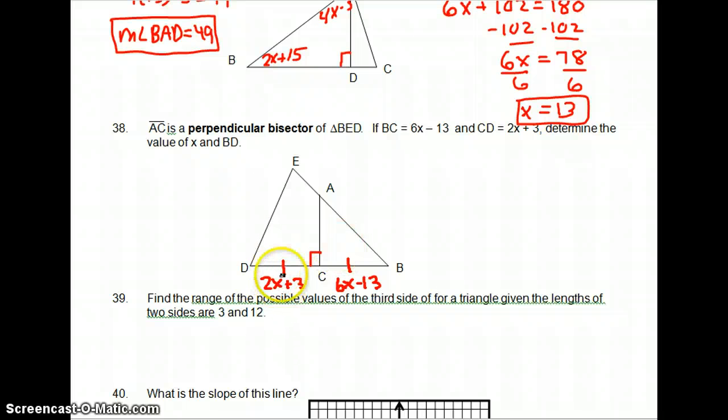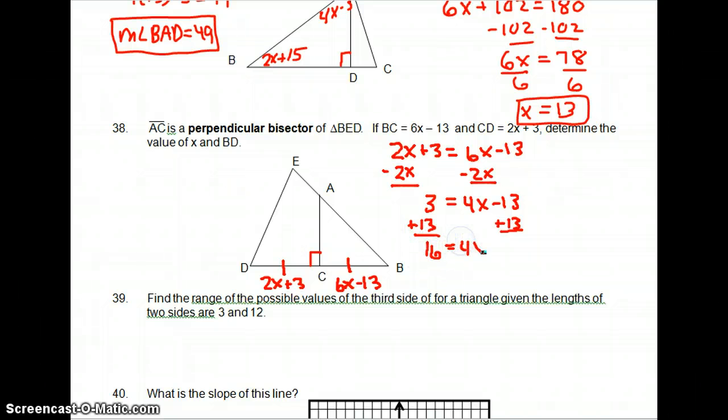So first we need to find X. These are equal, so I have 2X plus 3 equals 6X minus 13. Subtract the small X from both sides. This is 3 equals 4X minus 13. Add 13 here and 13 here. 16 equals 4X. Divide by 4. X equals 4.